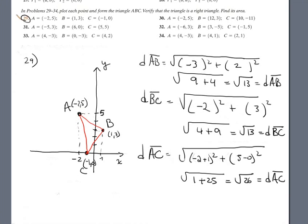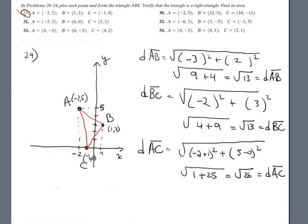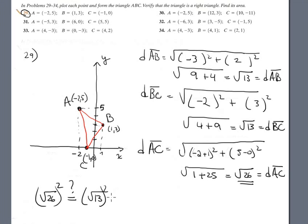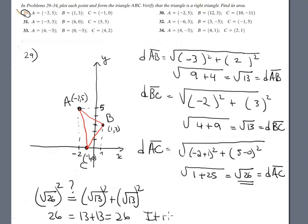Now after finding the distances, verify if the triangle is right. Take the largest side, square root 26, squared, and check that it equals the sum of the other two sides squared: square root 13 squared plus square root 13 squared. This is 26 equals 13 plus 13, which is 26. It is a right triangle.